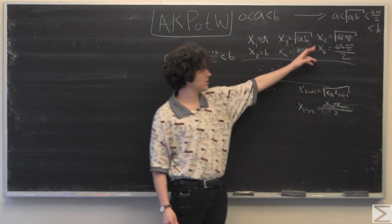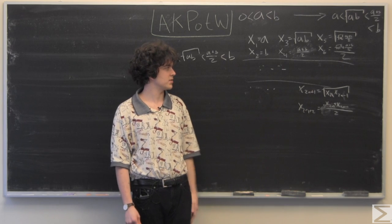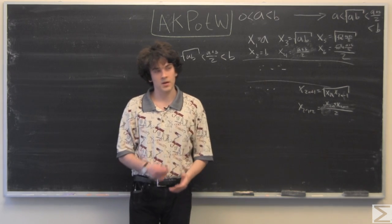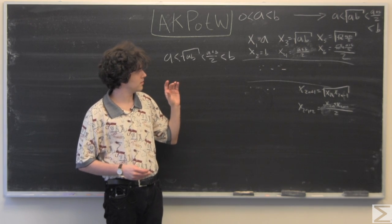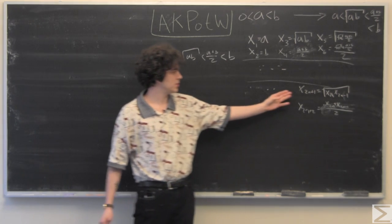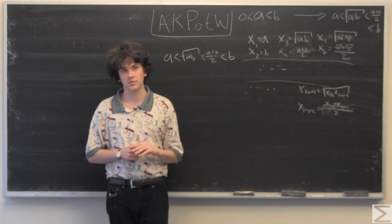We know we have a smaller distance to go between x3 and x4 than we did between x1 and x2. And similarly, we have x5 and x6 is a smaller distance than x3 and x4. But the fact that the distance between x sub 2n plus 1 and x sub 2n plus 2 is decreasing doesn't tell us that the sequence converges.